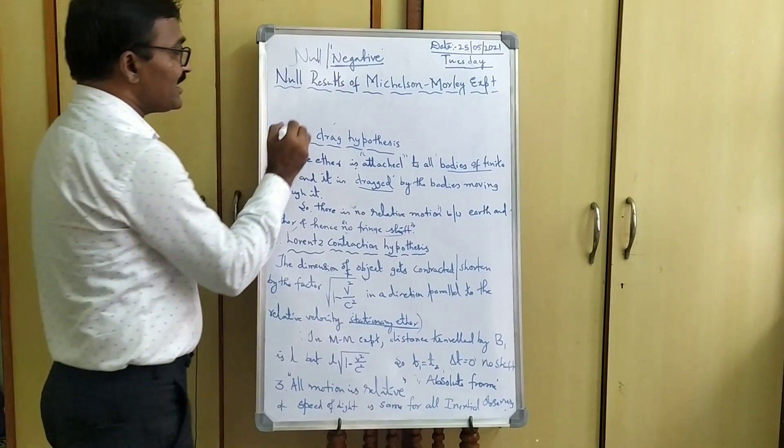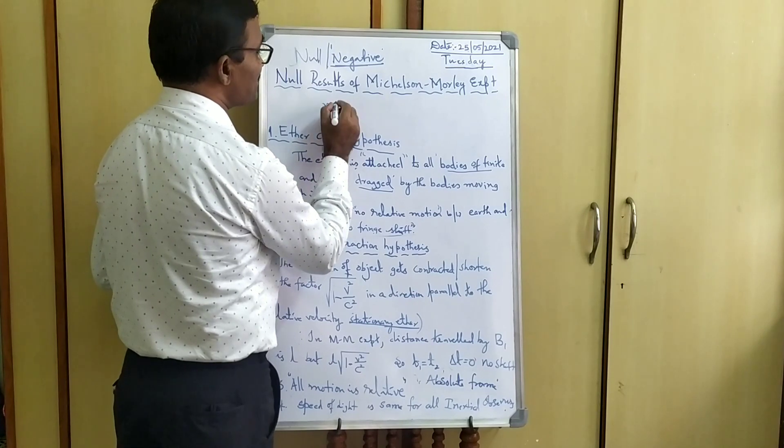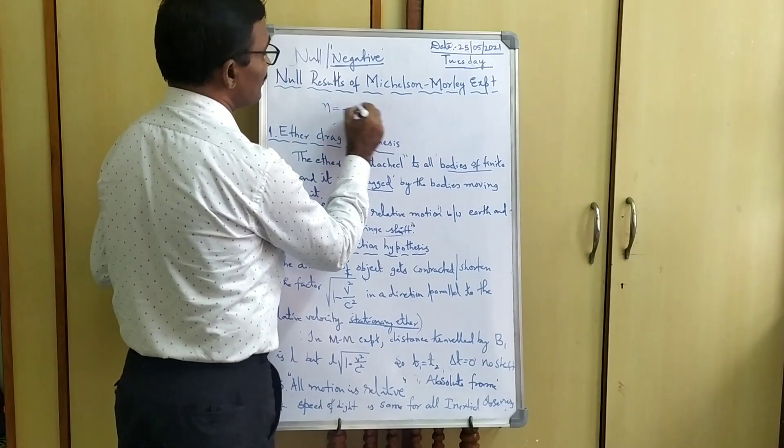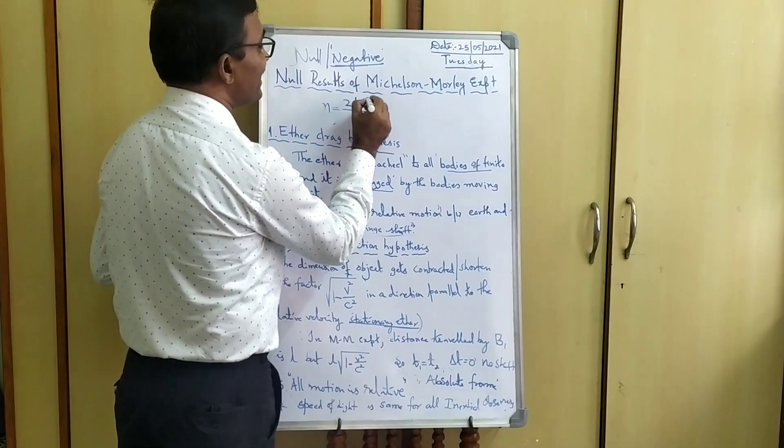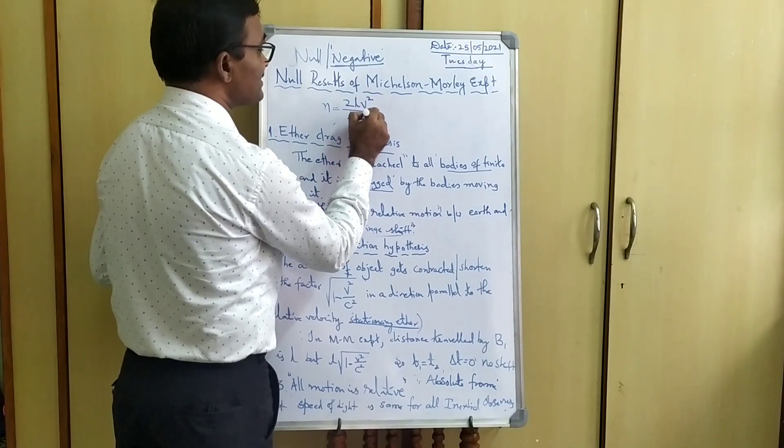So in the last class, in the theory of the Michelson-Morley Experiment, we have got the final expression: N is equal to 2LV squared upon lambda C squared.